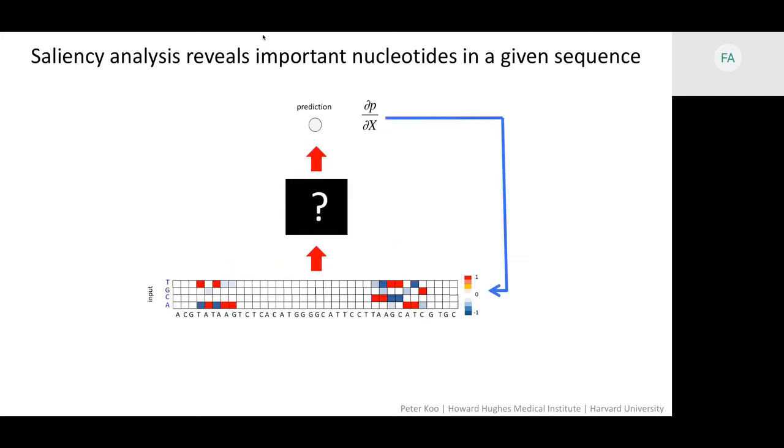And if that nucleotide variant is favorable, then it'll have a positive derivative. And if it's unfavorable, it'll have a negative derivative. And we can represent this saliency map that we get out for a given sequence as a sequence logo.